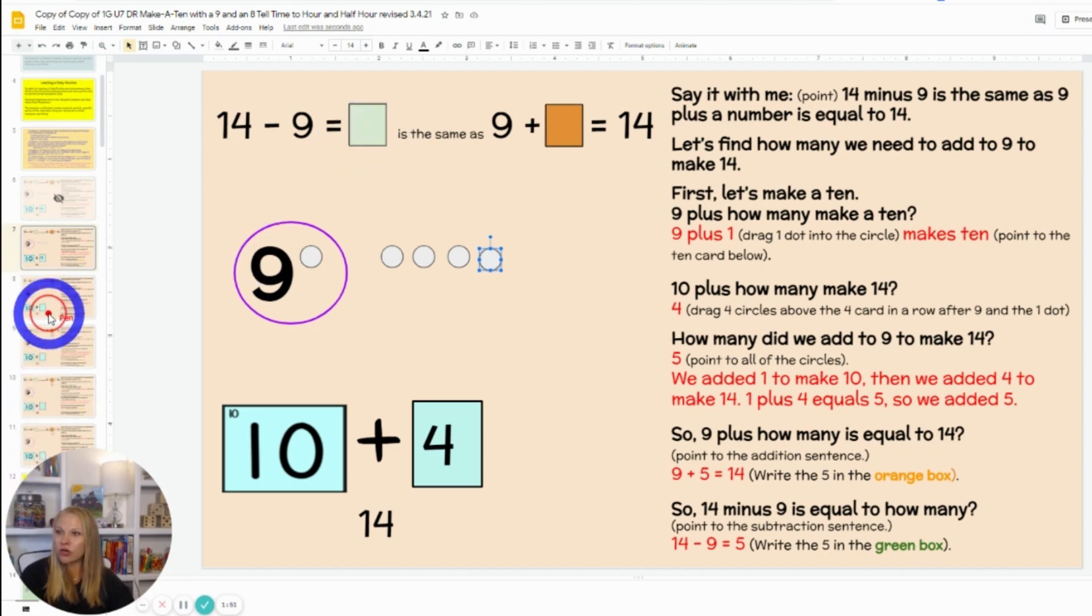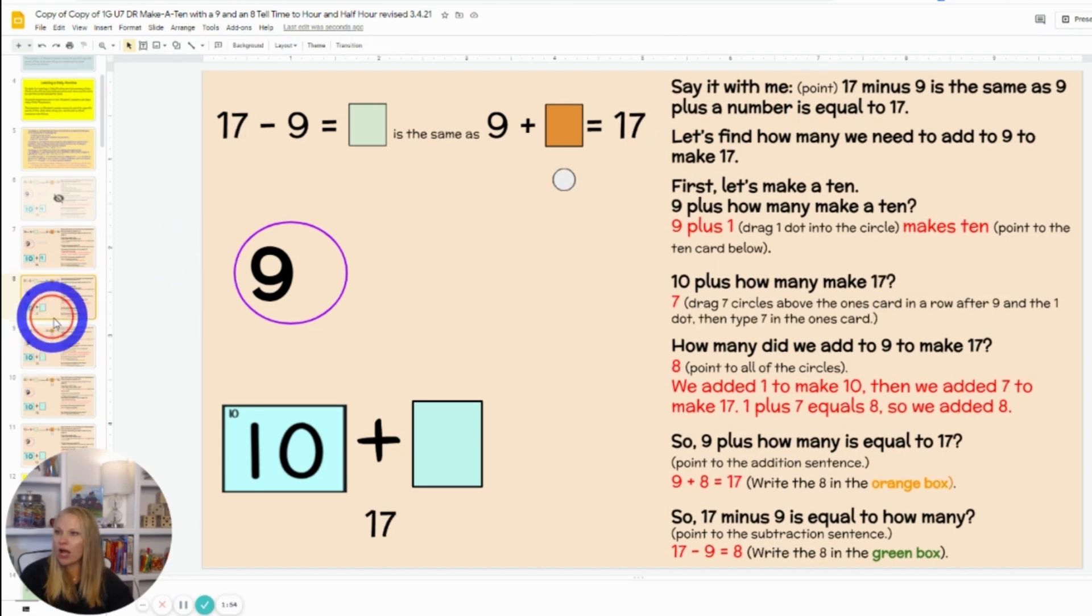Now we're going to, you can continue that. You can continue that for several more examples. Let's just do one more just for fluency sakes. Read it with me: 17 minus 9 equals unknown. That's the same as class 9 plus unknown equals 17. Let's put it on a math mountain. My total is 17. My partner is 9. What am I looking for? An unknown partner.